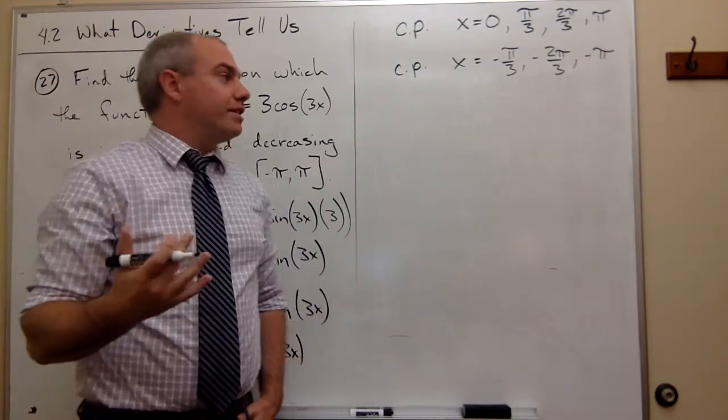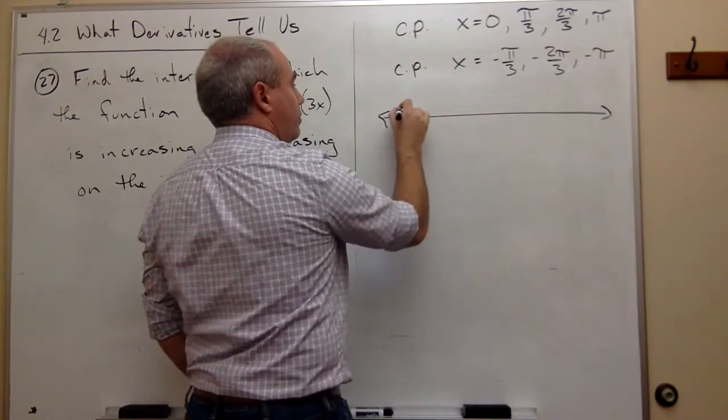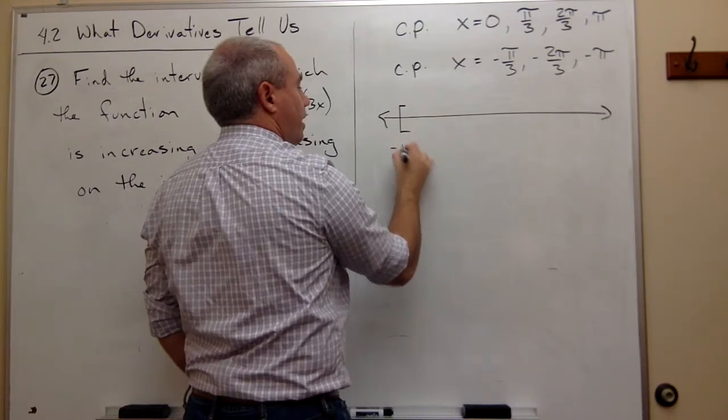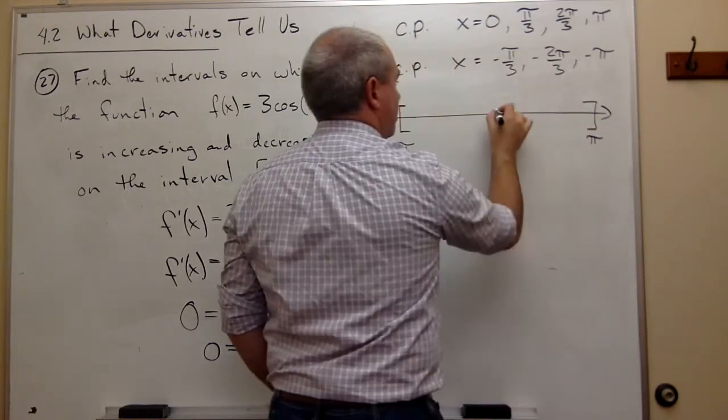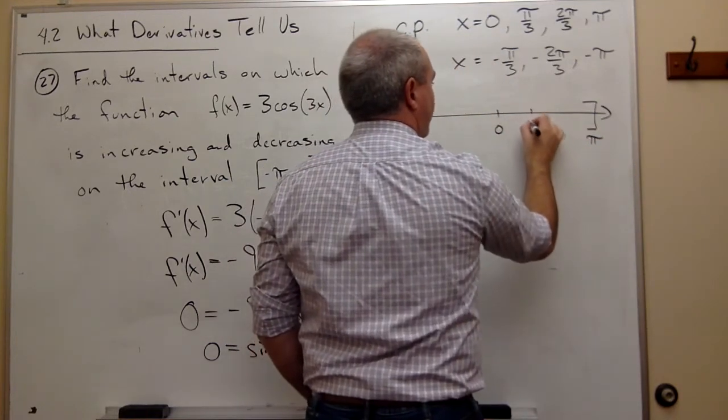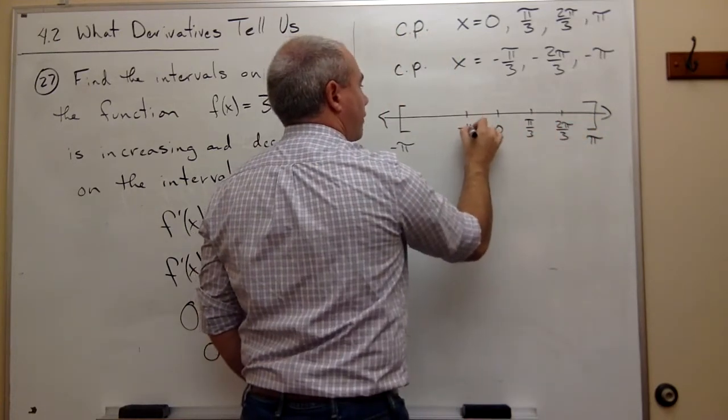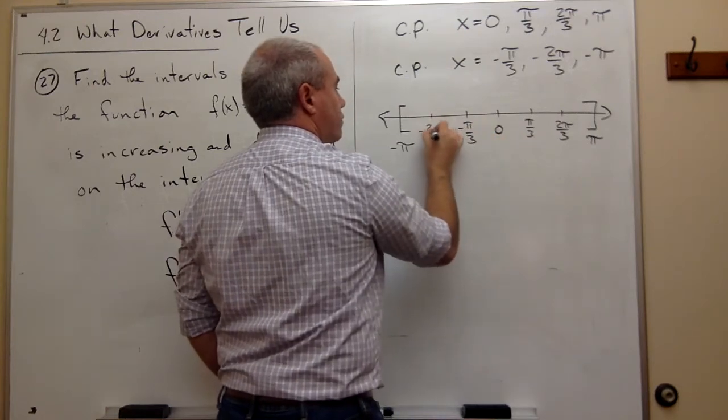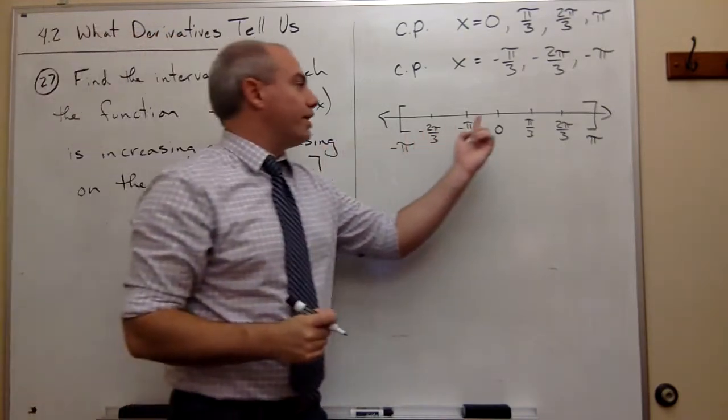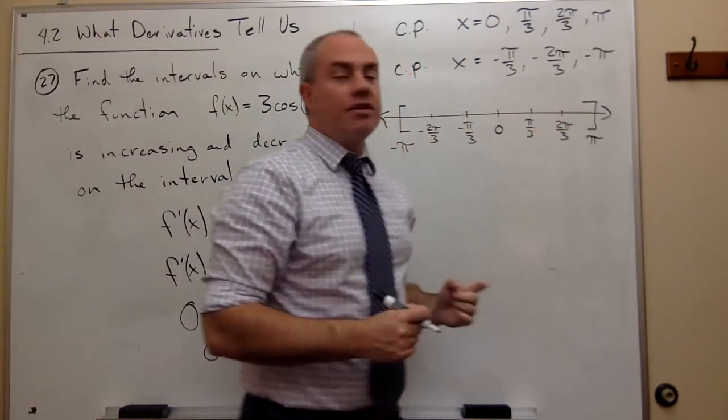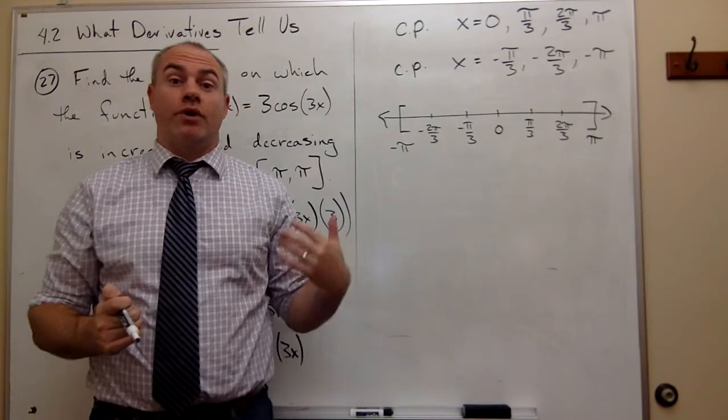What we need to do now is if we're trying to figure out where this thing is increasing and decreasing, we have to put these all on our number line. So let's say that this is my negative pi, and up here is pi. We've got 0, pi over 3, 2 pi over 3, negative pi over 3, and negative 2 pi over 3. Now we need to test a point in each one of these intervals to see if this thing is increasing or decreasing on that interval. In other words, is it positive or is it negative?